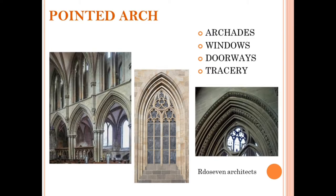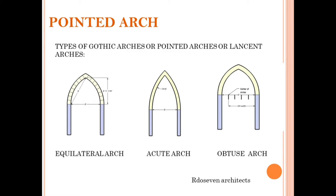The pointed arch is a two-center arch. There are three types of pointed arches: first, the equilateral pointed arch; second, the obtuse pointed arch; and third, the acute pointed arch. These pointed arches are also known as lancet arches.